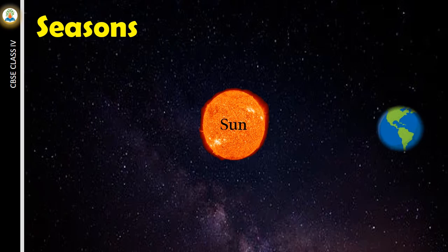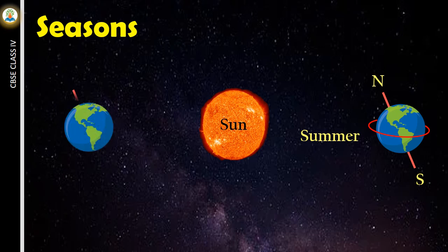When the Earth revolves around the sun, the northern hemisphere is tilted towards the sun. The southern hemisphere moves away from the sun. The sun rays fall directly on the northern hemisphere and the days are hotter. Thus, this region has summer season. At the same time, sunlight does not fall for a long duration in the southern hemisphere as it is away from the sun. Thus, it is winter season in the southern hemisphere.